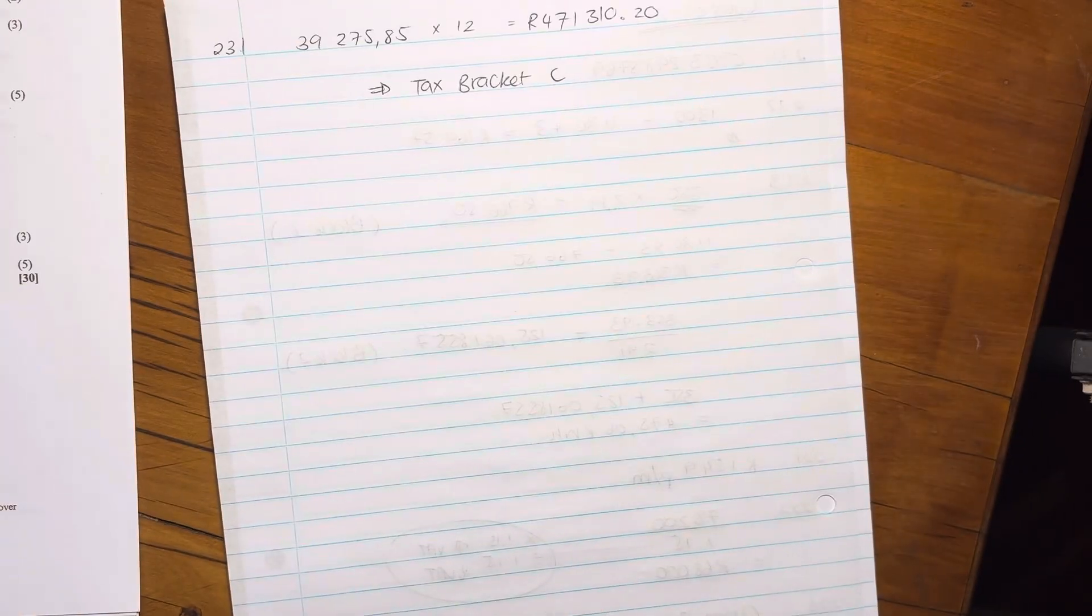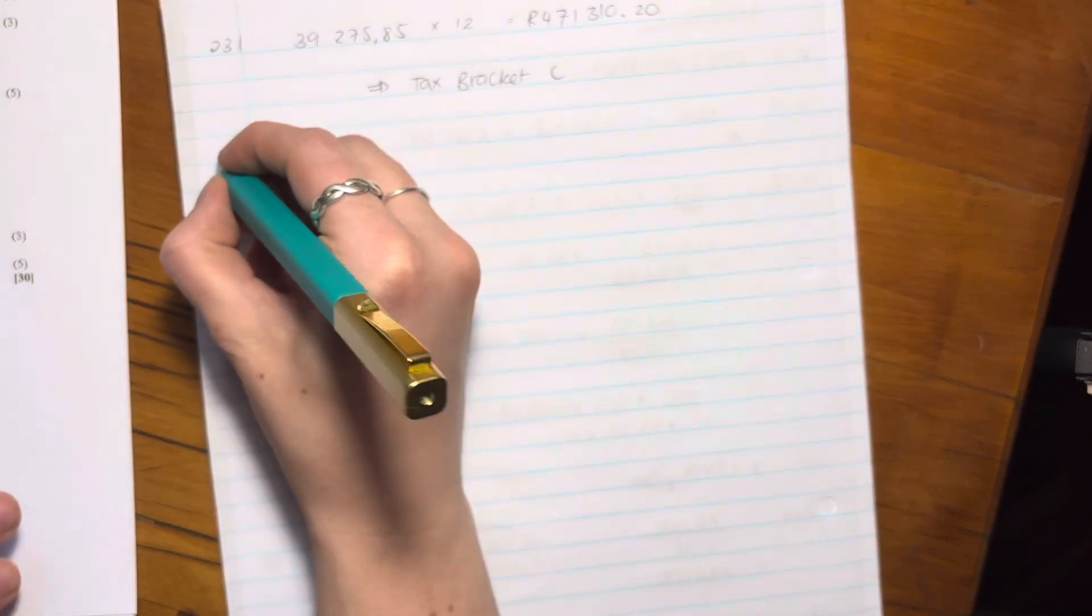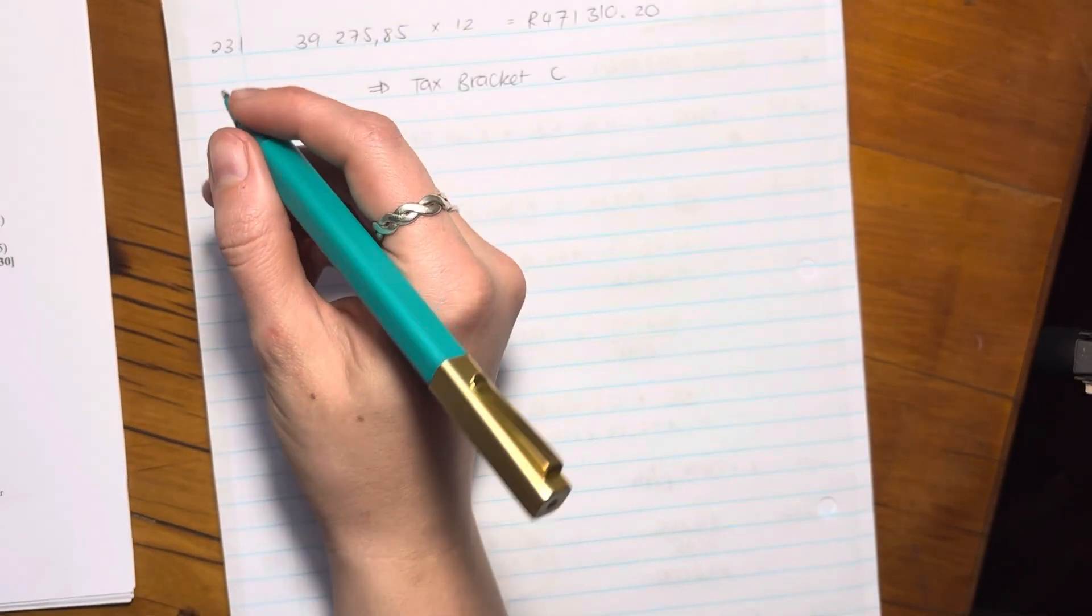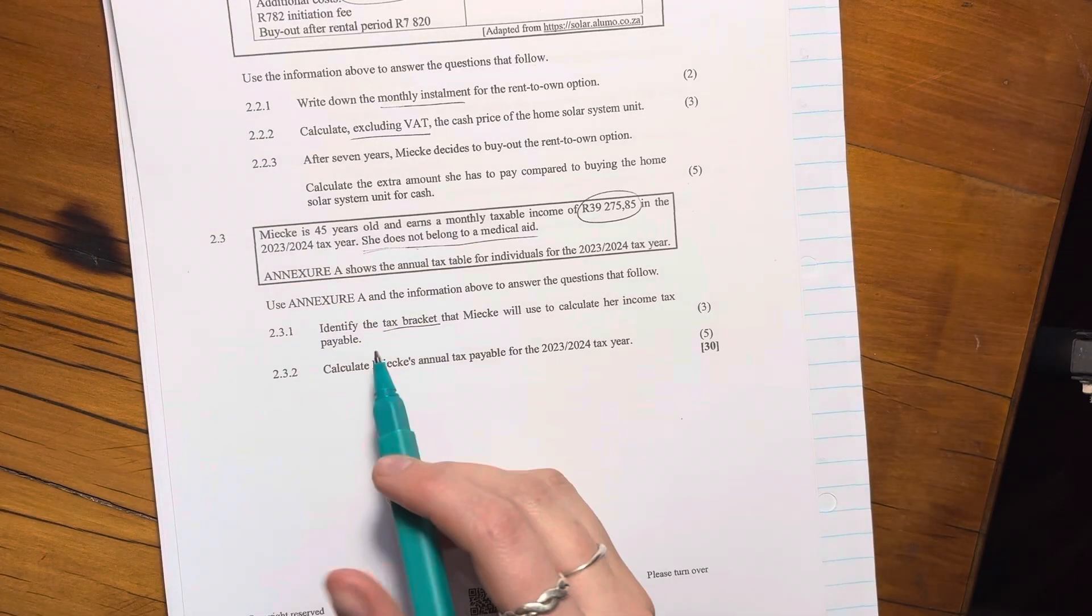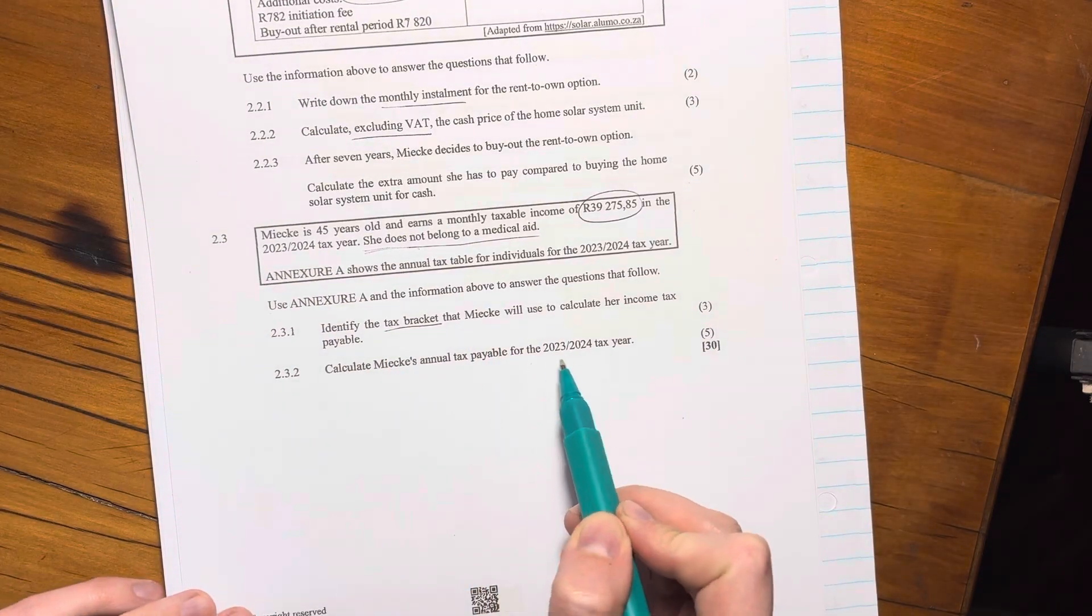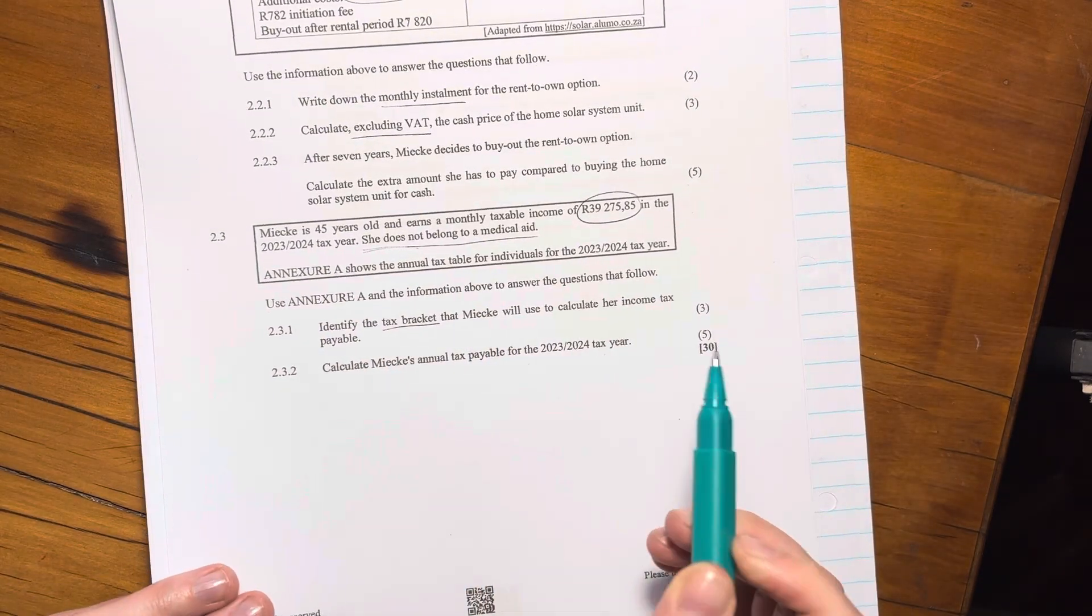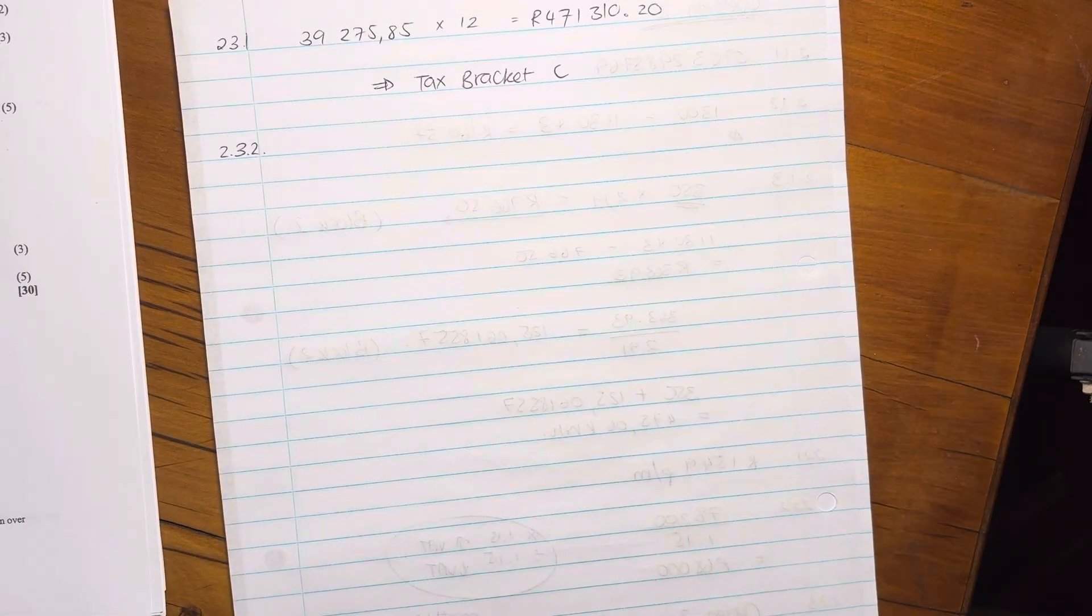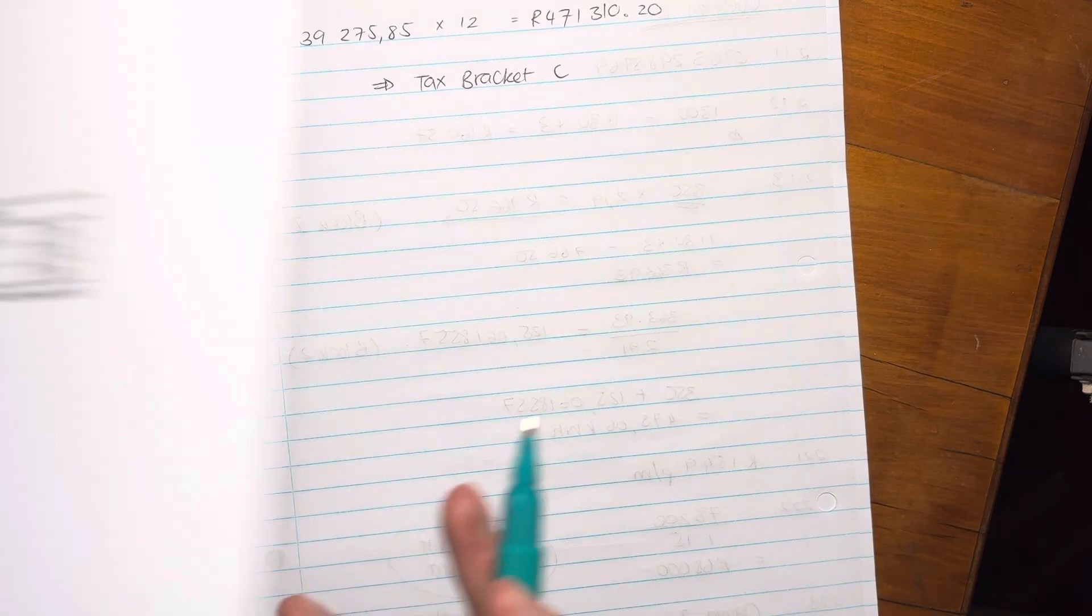Okay, now the next question, which you should be anticipating is going to be, please calculate her tax. So let's just label the question correctly. Let's read the question. Calculate her annual tax payable for this year. Okay, so first thing we're going to do is we're going to say, we know that she's in tax bracket C.